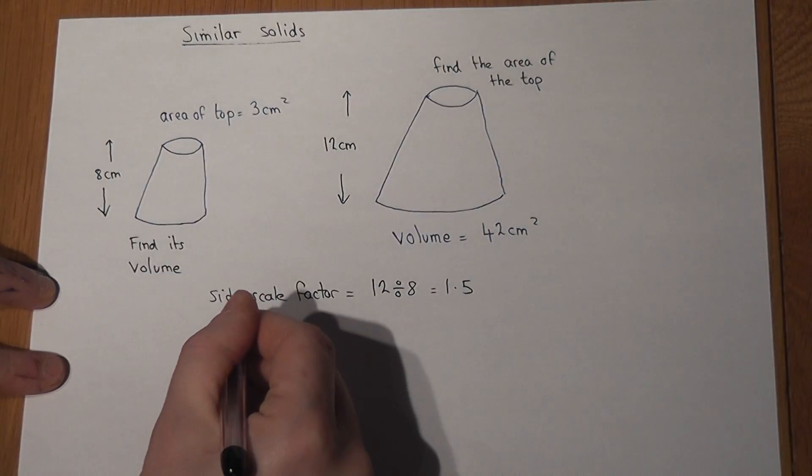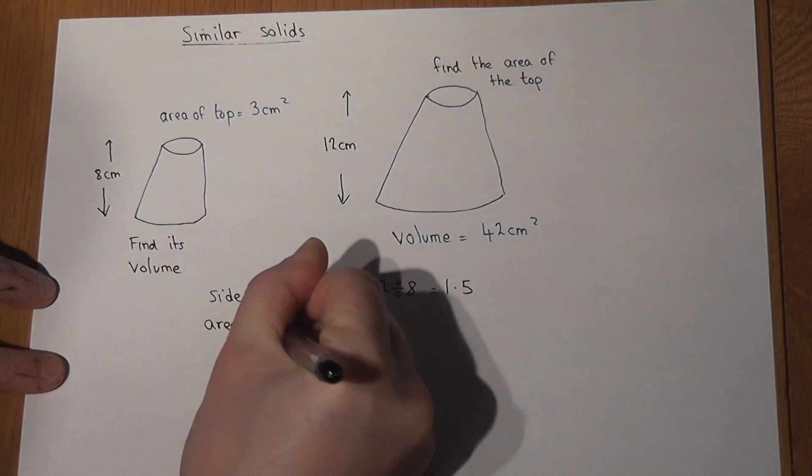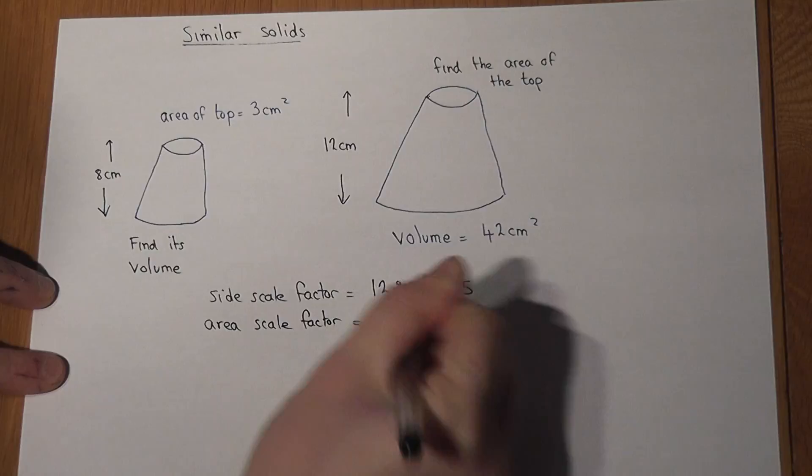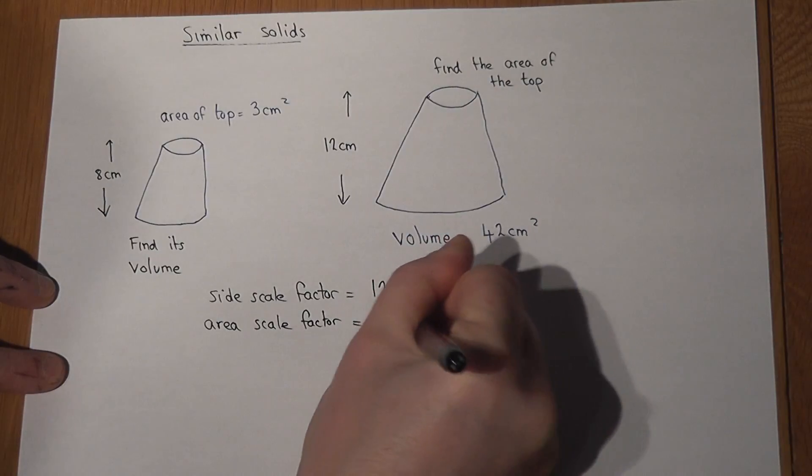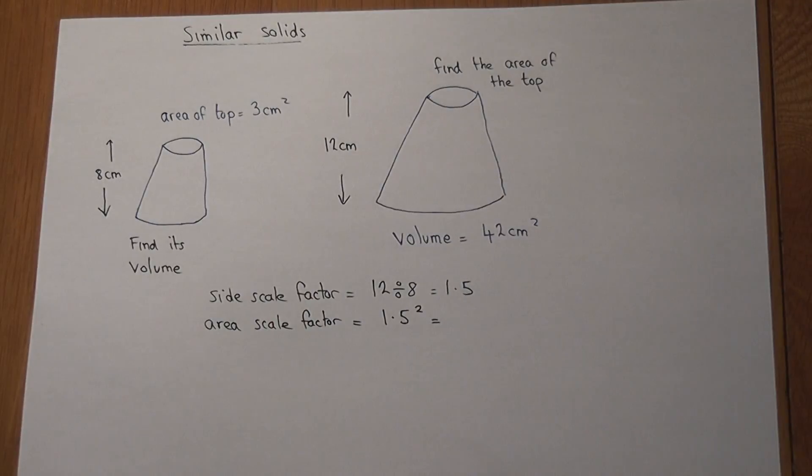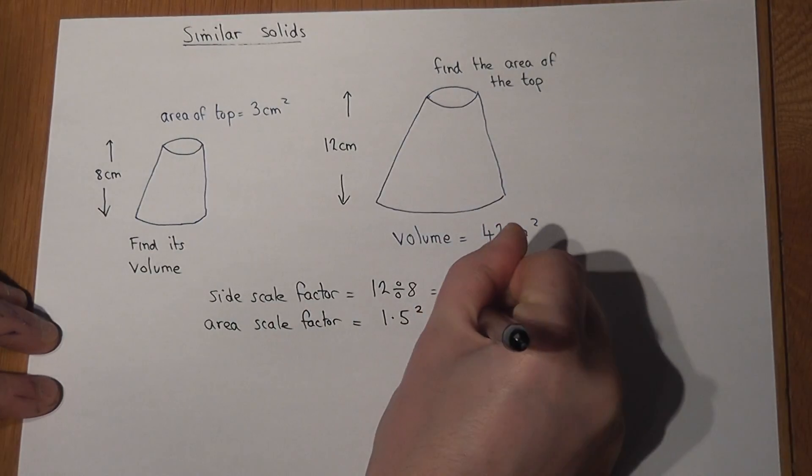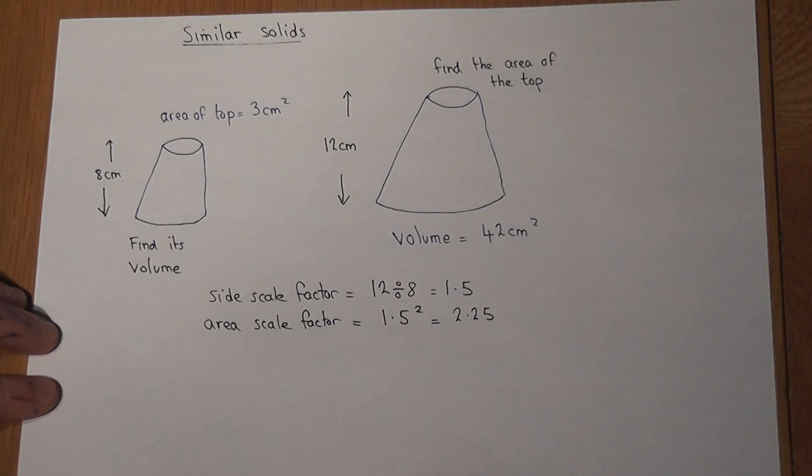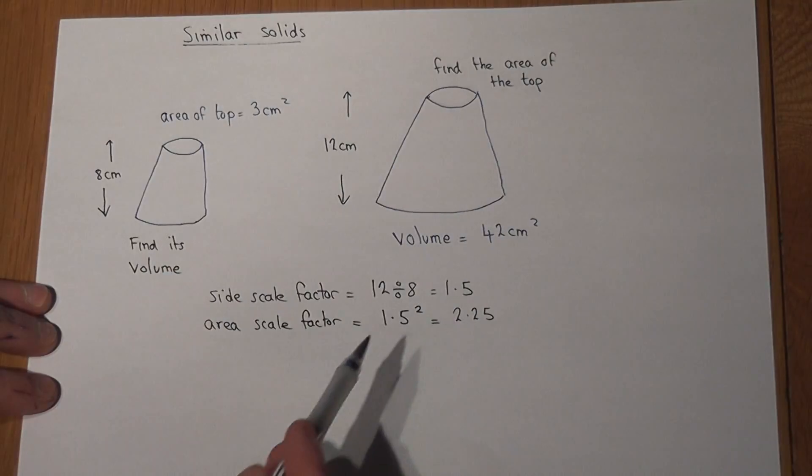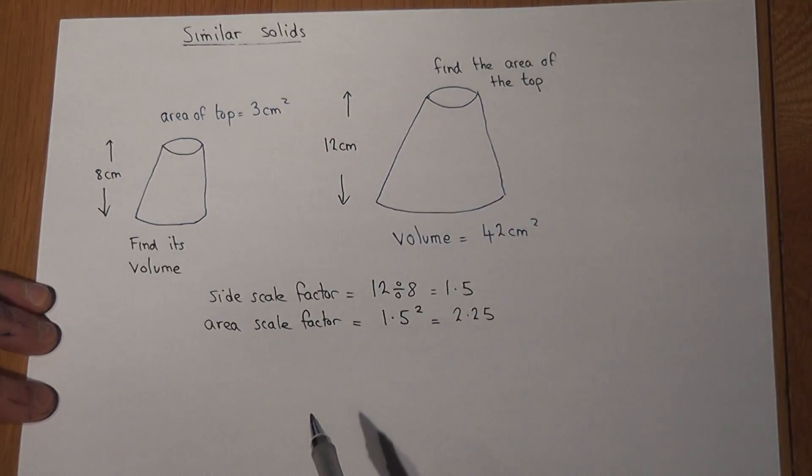If I know the side scale factor, I can find the area scale factor by squaring. 1.5 squared equals 2.25. So whilst the sides are 1.5 times as big, the areas are 2.25 times as big.